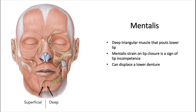The mentalis muscle is a deep triangular muscle that pouts the lower lip. It originates from the mental tubercle of the mandible — where 'mental' relates to the area of the chin. Mentalis strain on lip closure is a sign of lip incompetence, which was discussed in our orthodontic series, and it can also displace a lower denture, as covered in our prosthodontics series.